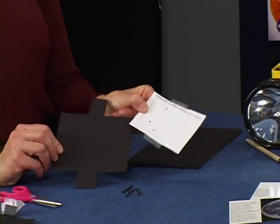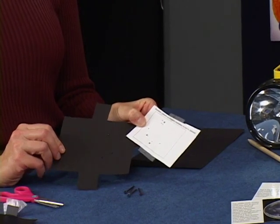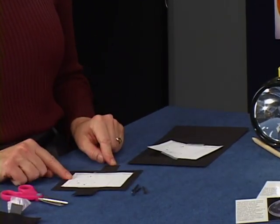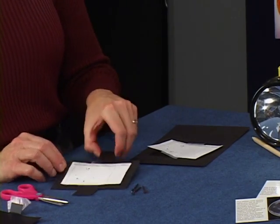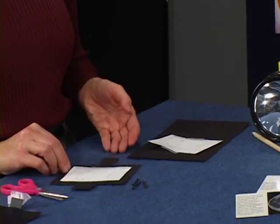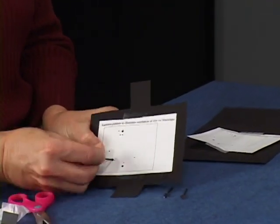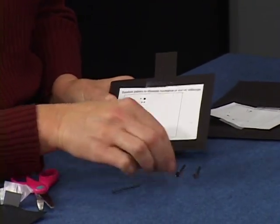Cut out the star mask template pattern that you want to use. Lay it on the square, tape the template to the construction paper. Use the nail to punch the larger holes and the straight pin to poke the small holes.